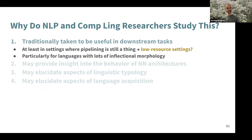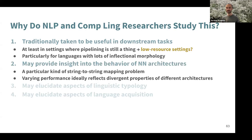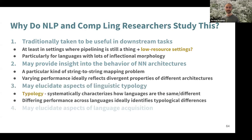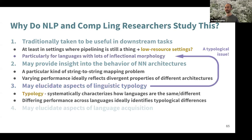People have studied this for several reasons. First, it's traditionally considered useful in downstream tasks, especially for low-resource languages, many of which are morphologically complex. It may also provide insight into what kinds of generalizations neural network architectures make, elucidate aspects of linguistic typology — how different languages are similar or different — and potentially illuminate aspects of language acquisition: do these model learners tell us about human learners?